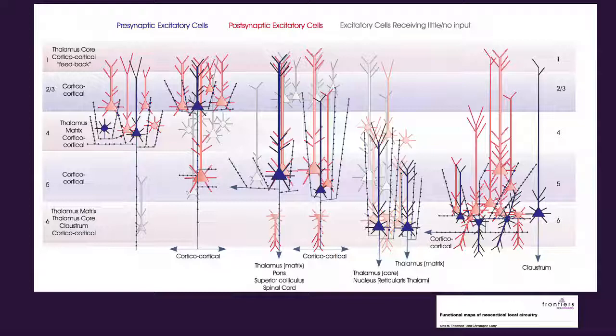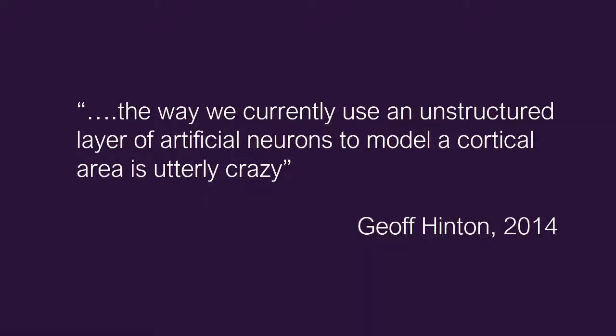So you have to understand what these structured circuits mean. What is the computational underpinning of the circuits? You have to understand it from a computer science aspect. And then you would start understanding what intelligence is. And in fact, one of the pioneers of deep learning, who is Jeff Hinton, made the statement that despite the success of deep learning, the way we currently use unstructured layer of artificial neurons to model a cortical circuit is utterly crazy. And he's right.